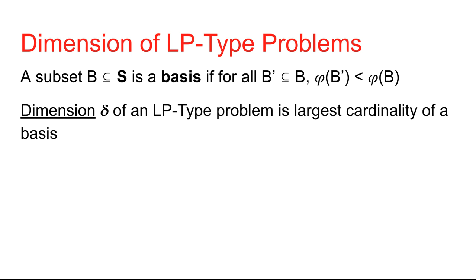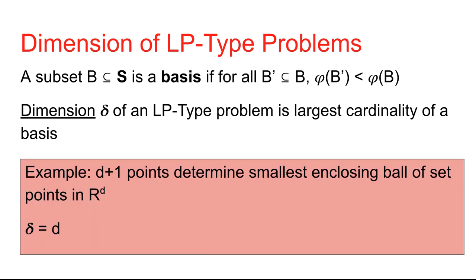Formally, the dimension of an LP-type problem is defined as follows. A subset B of S is called a basis if for all subsets B' of B, we have phi of B' is strictly less than phi of B. The dimension delta is the largest cardinality of a basis. As a concrete example: d+1 points determine the smallest enclosing ball of points in R^d — for instance, in the plane, three points determine the smallest enclosing circle. So the dimension of the smallest enclosing ball problem is d.